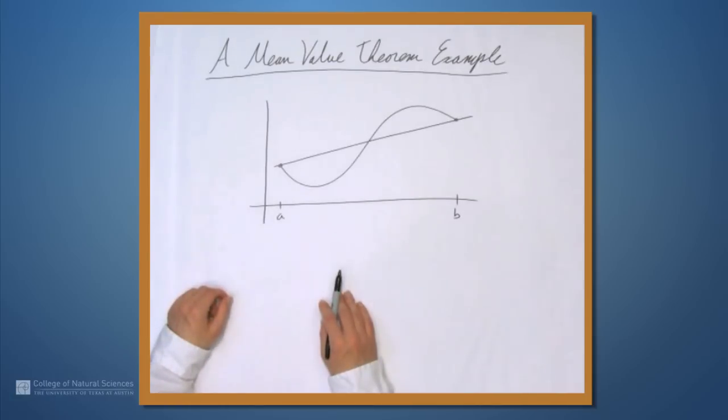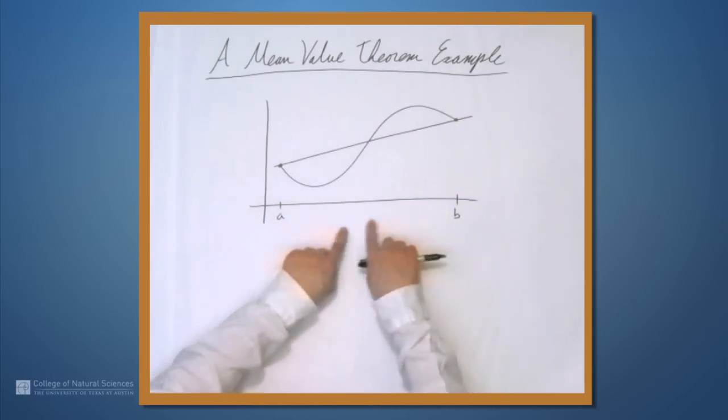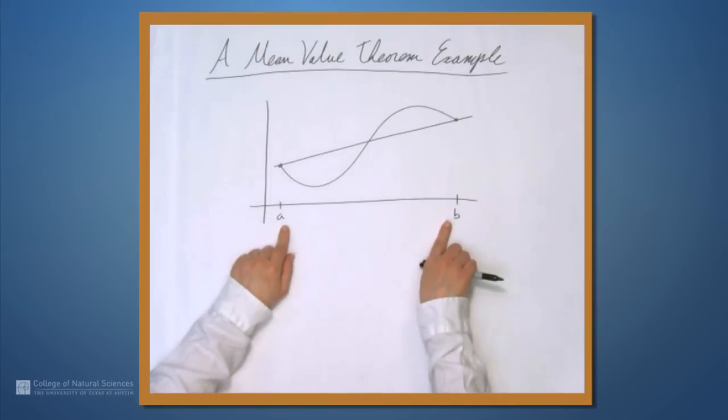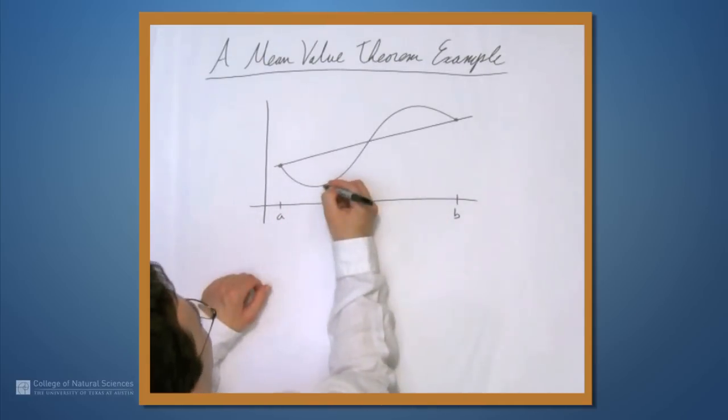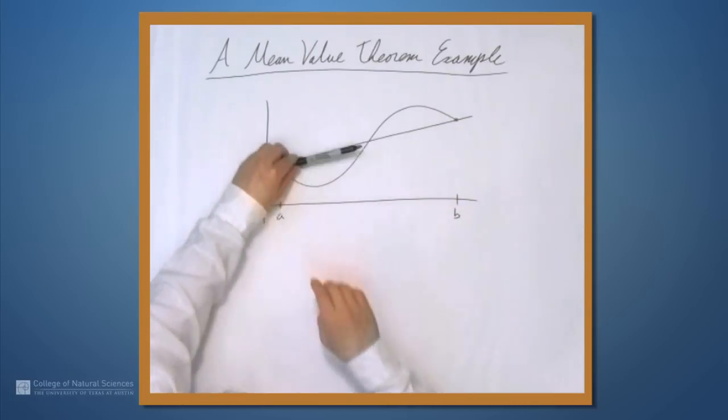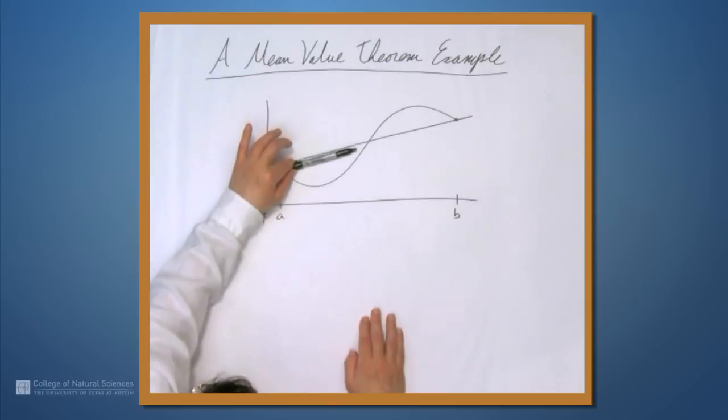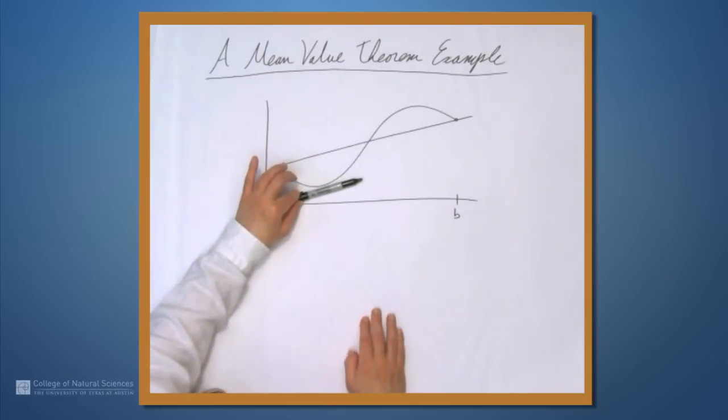The mean value theorem says that this slope is actually witnessed somewhere in this interval by the derivative. So if you imagine taking this line and dragging it down or up, keeping it with the same slope, you'll eventually hit this point.